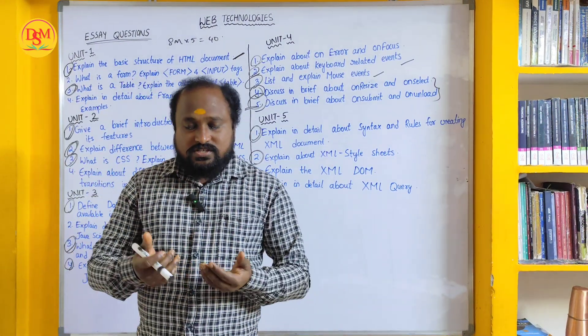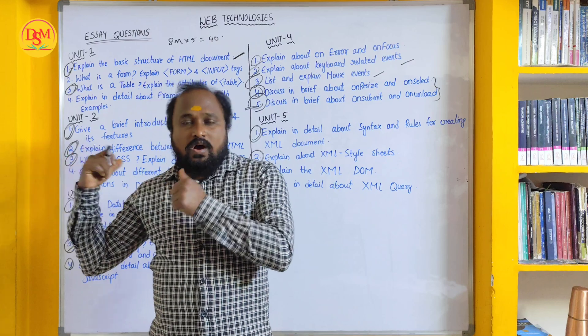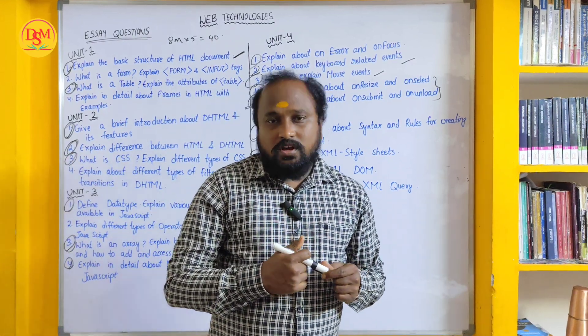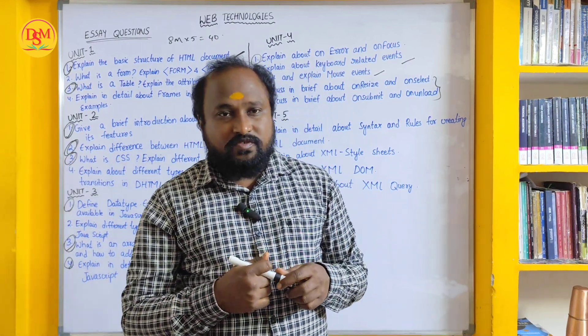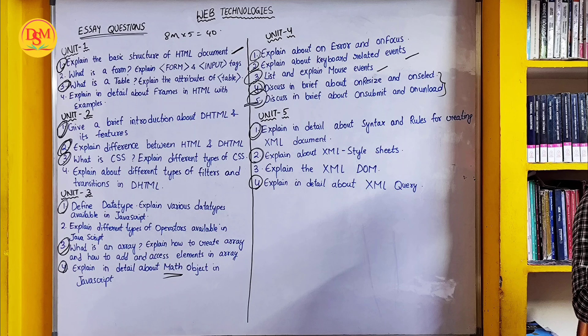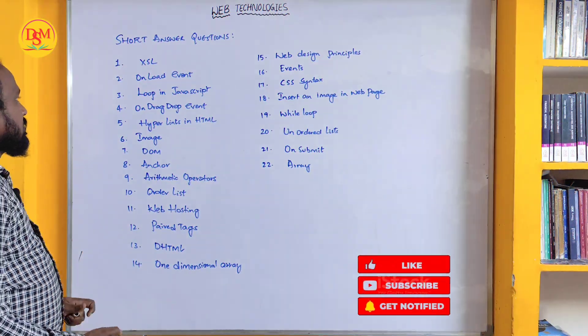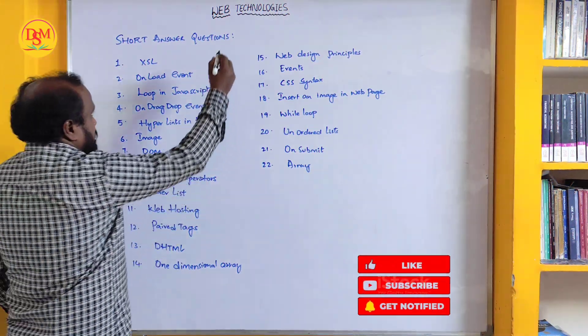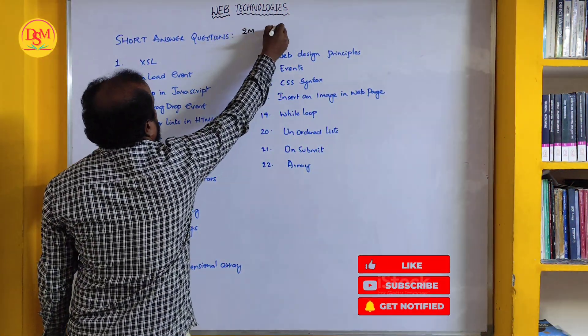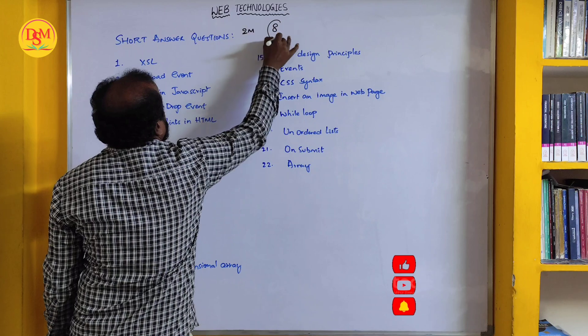That covers the long answer type questions. Now let's begin with the short answer type questions. These questions will be for two marks — he will give you eight questions and out of eight you have to write any five.